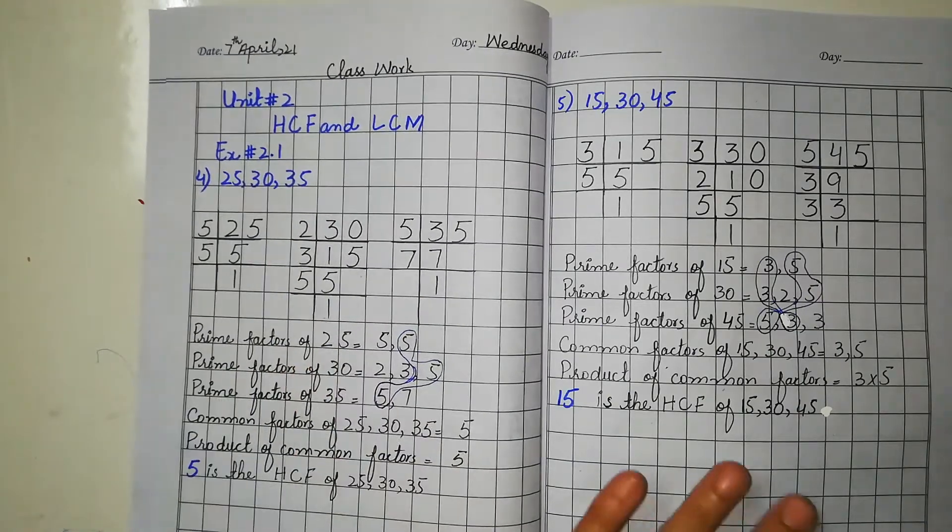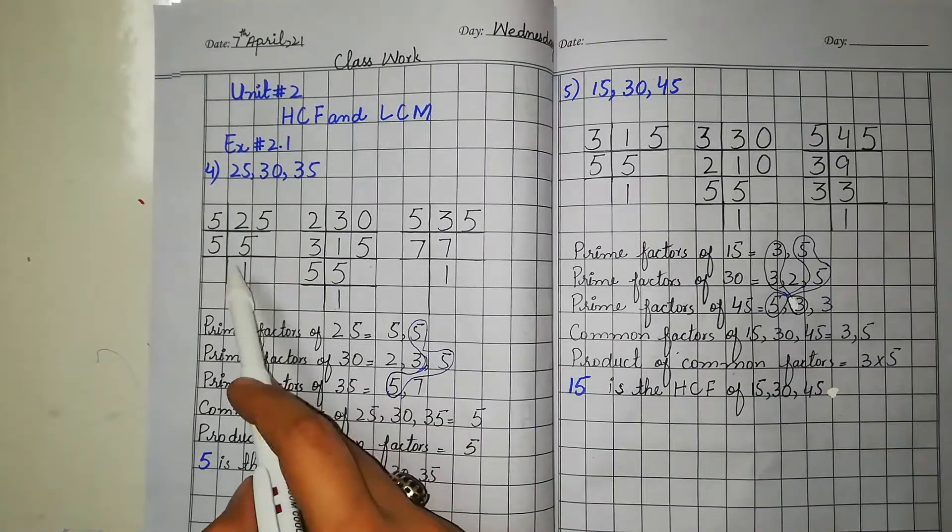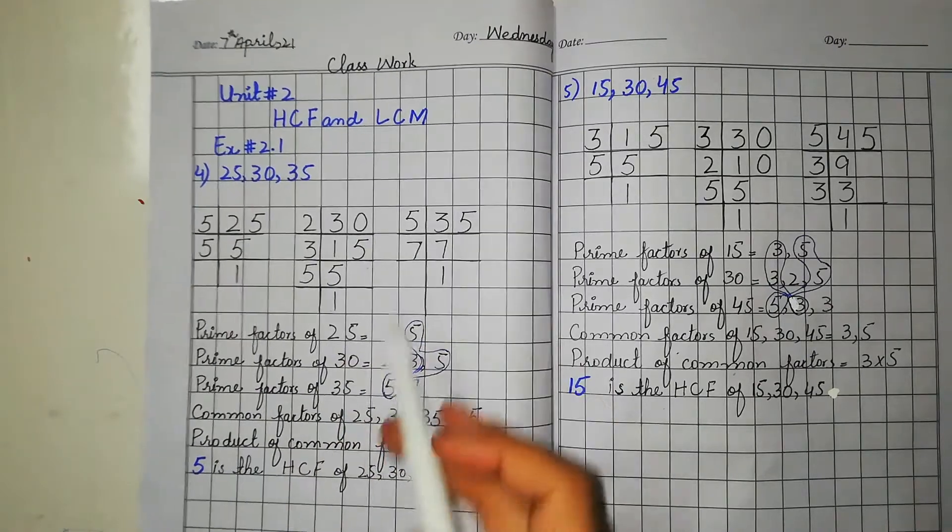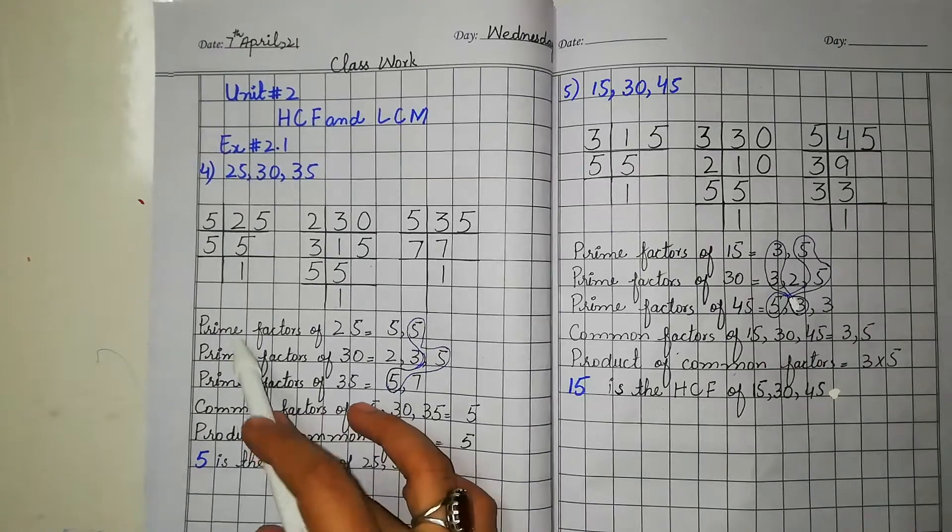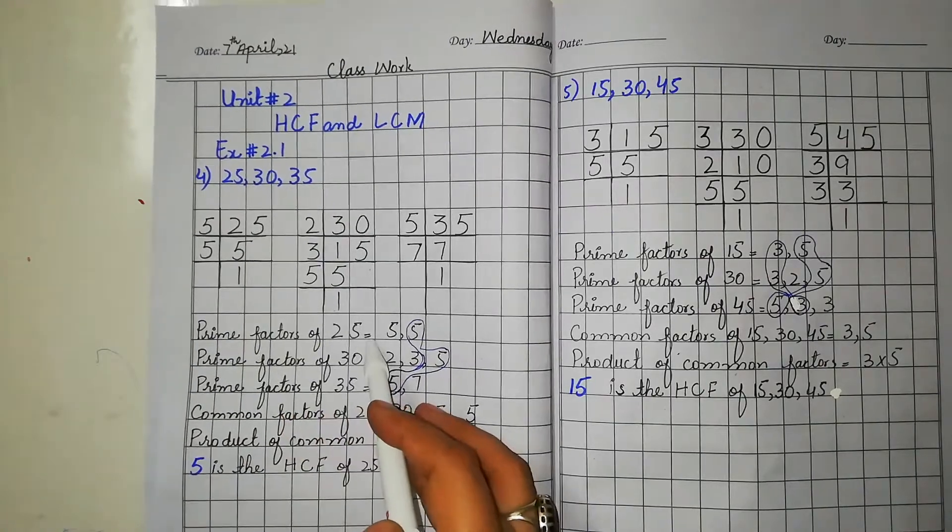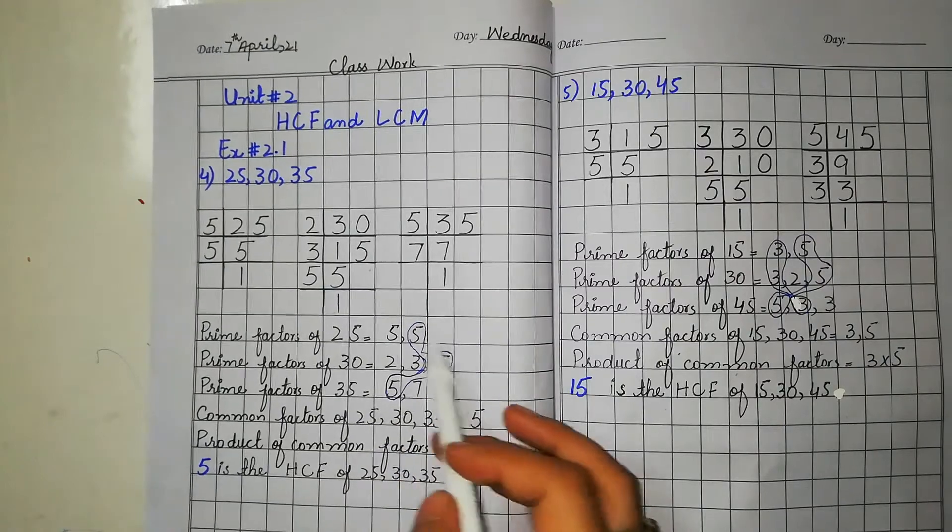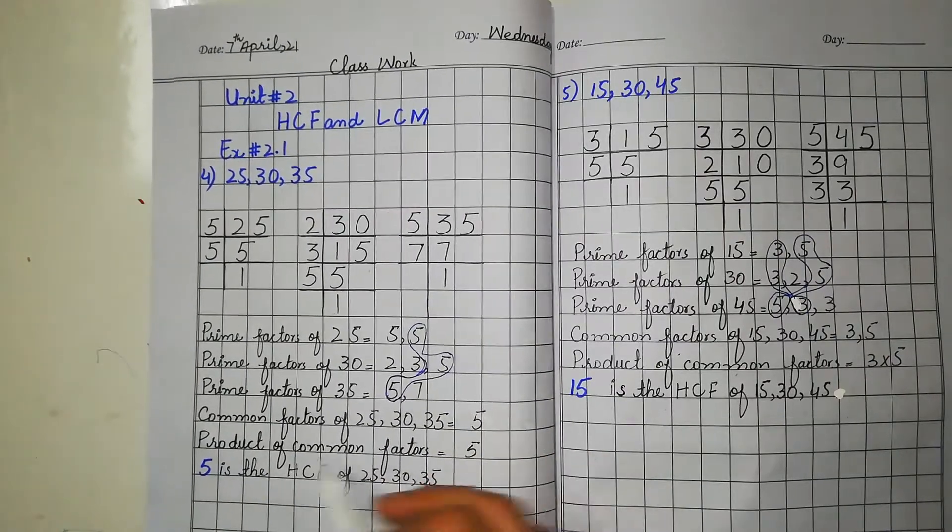Okay students, we will find out the prime factors of 25, 30, and 35. Same as we did last time, we will write the prime factors of 25, prime factors of 30, prime factors of 35. We will write the factors, and the common factors will be marked and we will write it here.